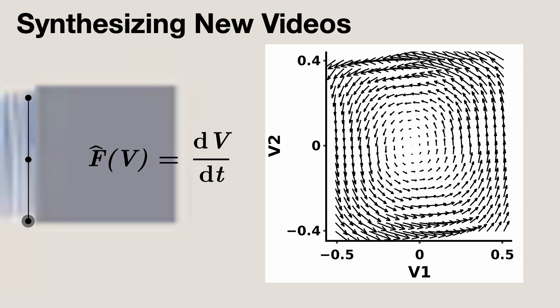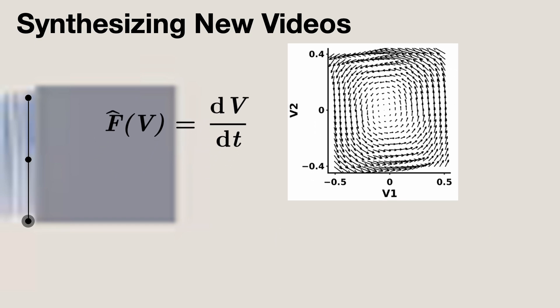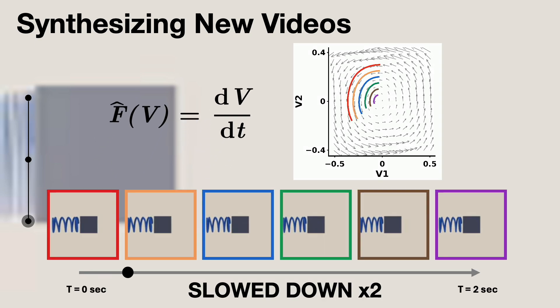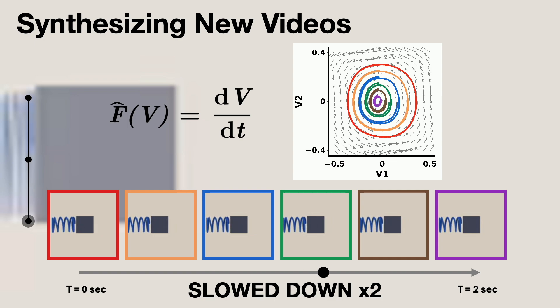Our discovered neural state vector field is continuously integrable, similar to the traditional equations of motion, allowing us to sample trajectories to generate new data.